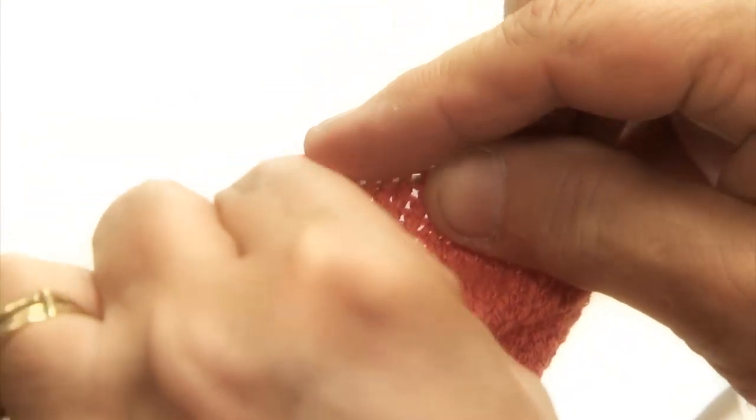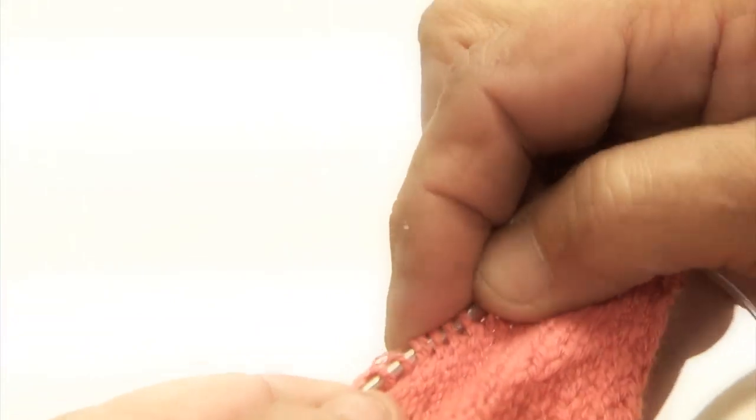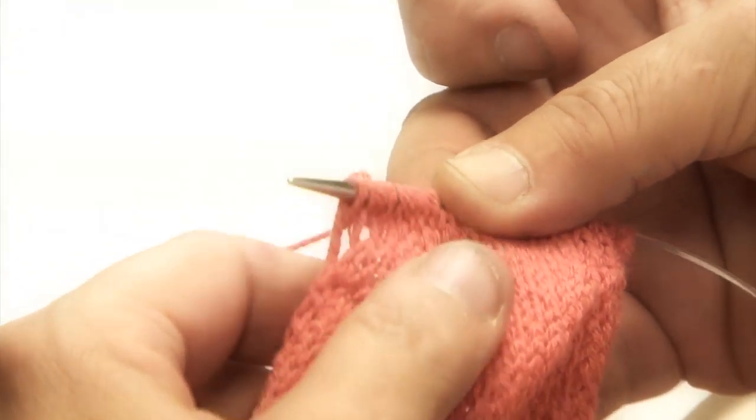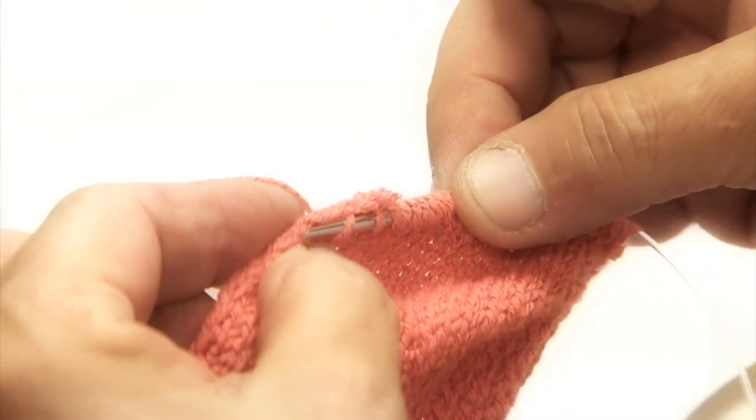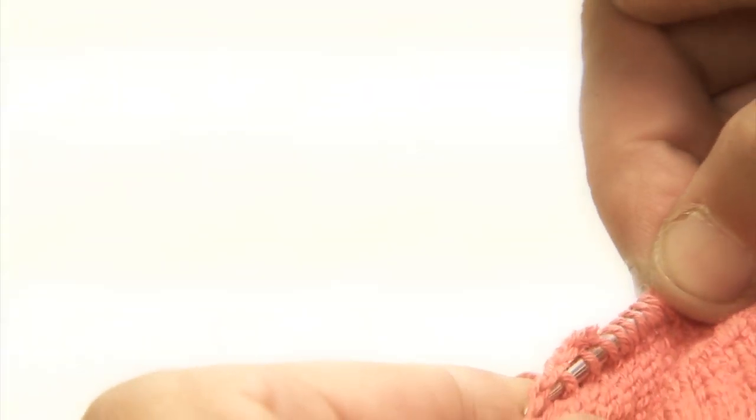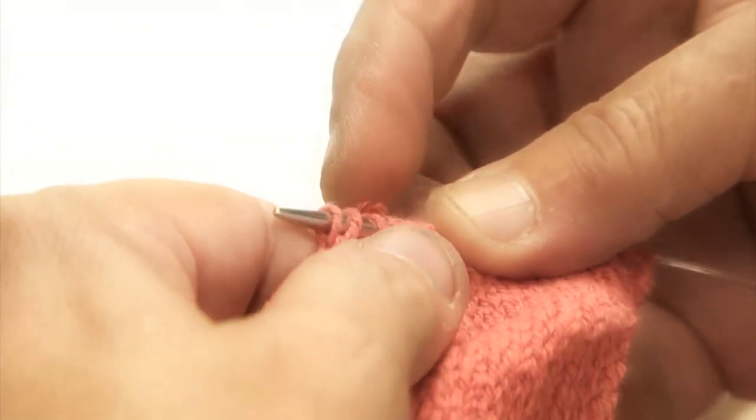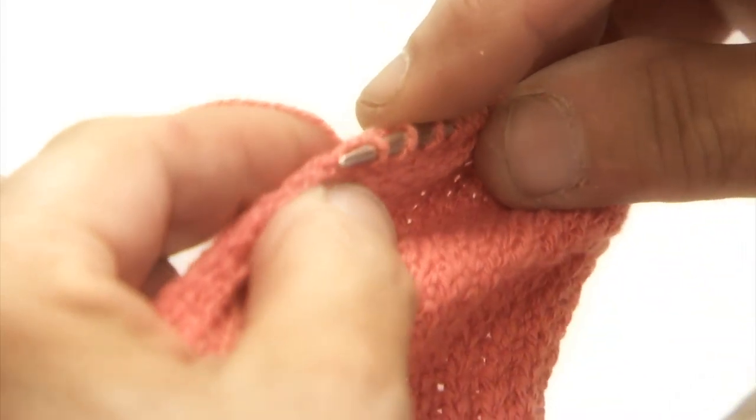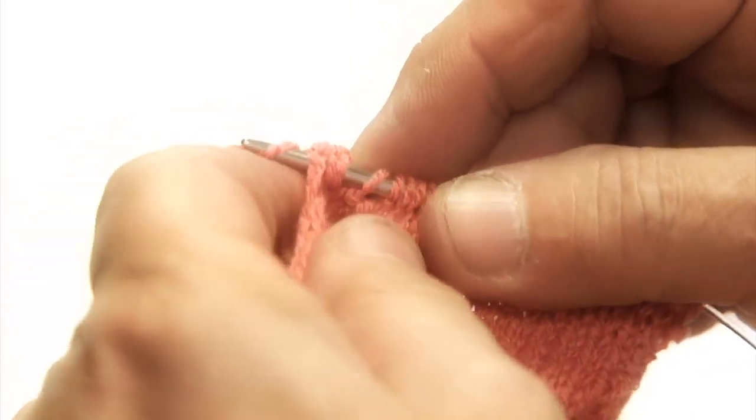There's the second one. Cross, pick up a loop, pop it through. So there's two. Now, if you were just picking up stitches, you just go through. But we're picking up and knitting. So we're popping them through and adding them onto our needle. And we're going to try and do the 14.